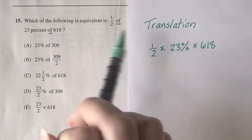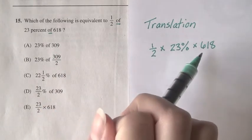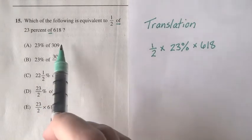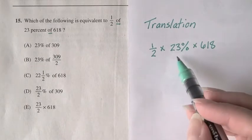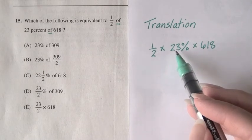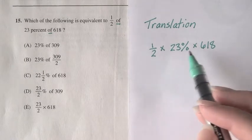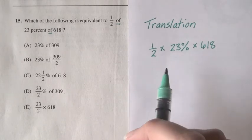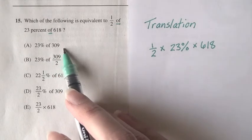We keep the 23%, but we've combined one-half times 618 into 309. That's fine—multiplication is commutative. We can move the 23% over, combine the 618 and one-half to get 309. This is totally acceptable.